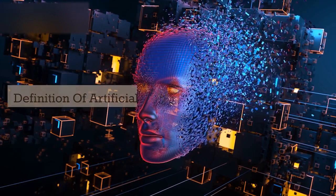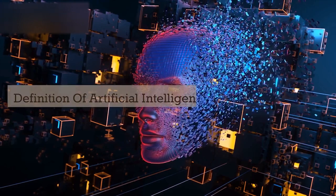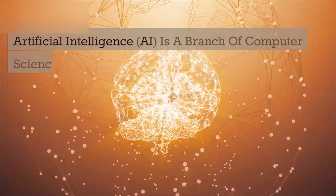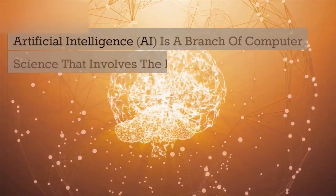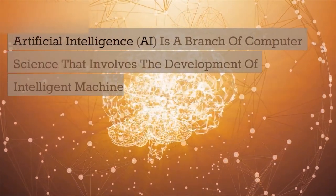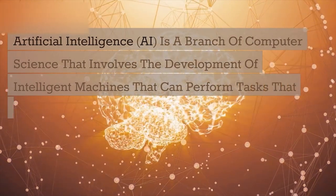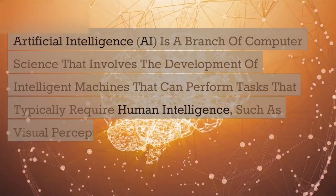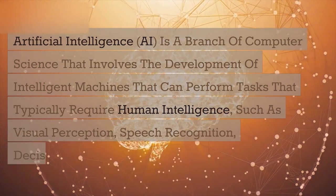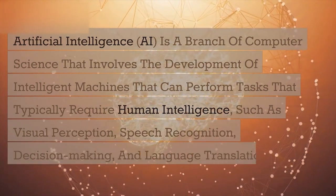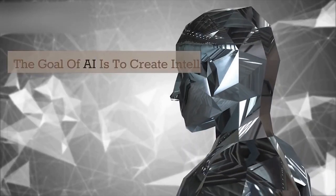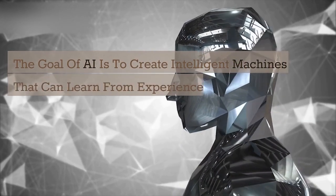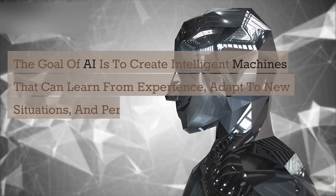Definition of Artificial Intelligence (AI). AI is a branch of computer science that involves the development of intelligent machines that can perform tasks that typically require human intelligence, such as visual perception, speech recognition, decision making, and language translation. The goal of AI is to create intelligent machines that can learn from experience, adapt to new situations, and perform tasks that would otherwise require human intervention.